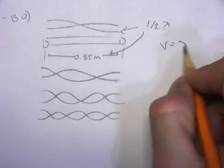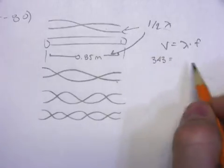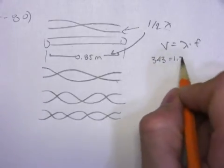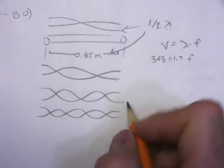So velocity is equal to wavelength times frequency, 343. Wavelength 1.7F. So 343 divided by 1.7.